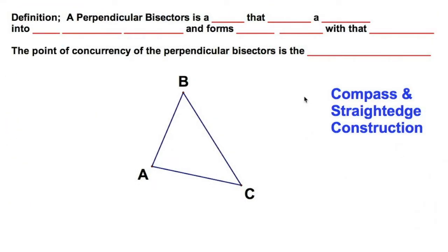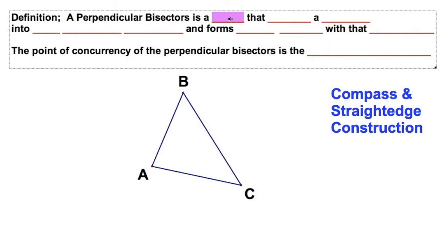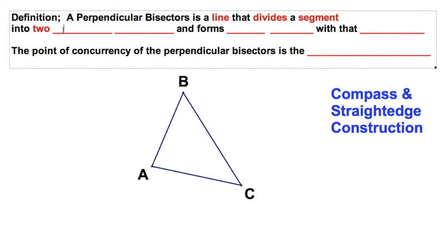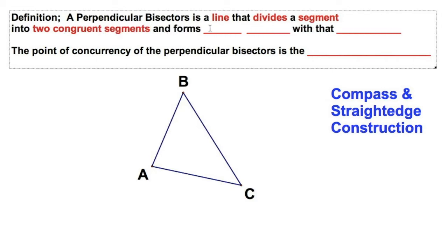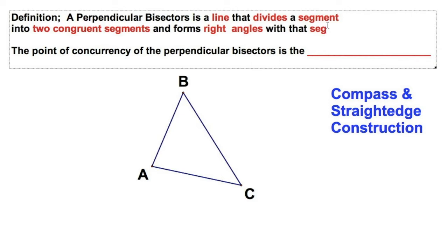Welcome to Naughty Notes. We're going to start by reviewing a definition from a few chapters back. Remember the perpendicular bisector? It was our very first classical construction — a construction that requires only a straight edge and a compass. A perpendicular bisector is a line, not a segment, that divides a segment into two congruent segments and forms right angles with that segment.